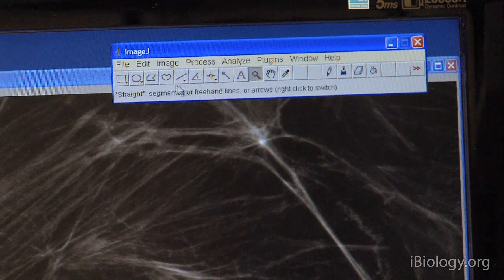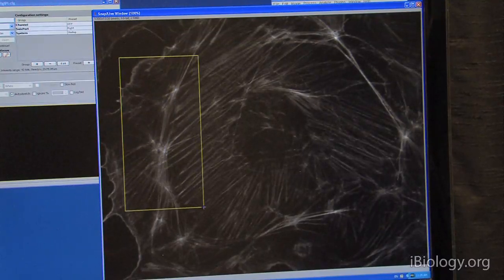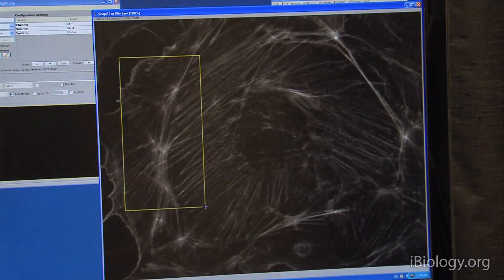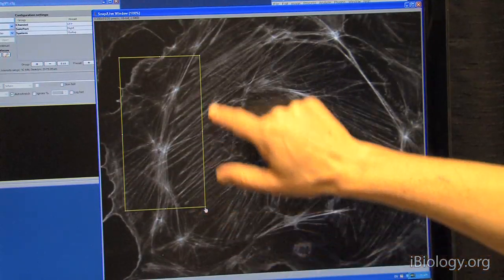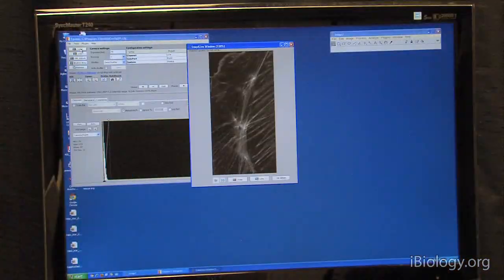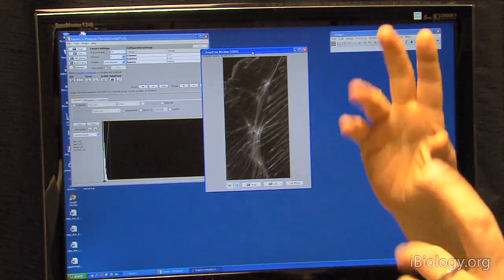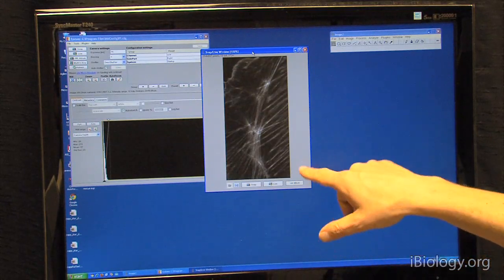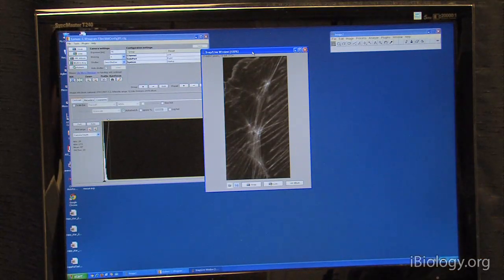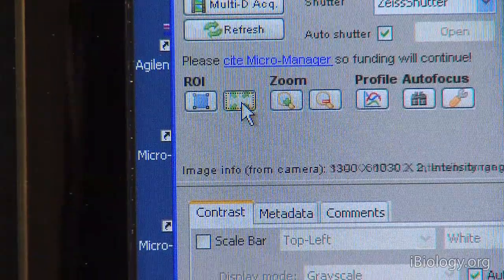Then, also, what often happens is that we're not interested in the whole image, but only in a small region of it. Let's say this is what we really want to follow. I can use the ROI tool. We only get this small region. So, the camera can also read this out much faster. And so, it's always helpful to use an ROI whenever it's applicable. Now, to go back to the full frame, we use the button next to that ROI and snap an image.